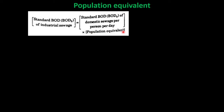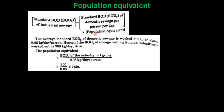From this equation, population equivalent equals the standard BOD of industrial sewage divided by the standard BOD of domestic sewage. The standard BOD of domestic sewage may be taken as 0.08 kilograms per day per person. The standard BOD of industrial sewage is then used in the calculation.